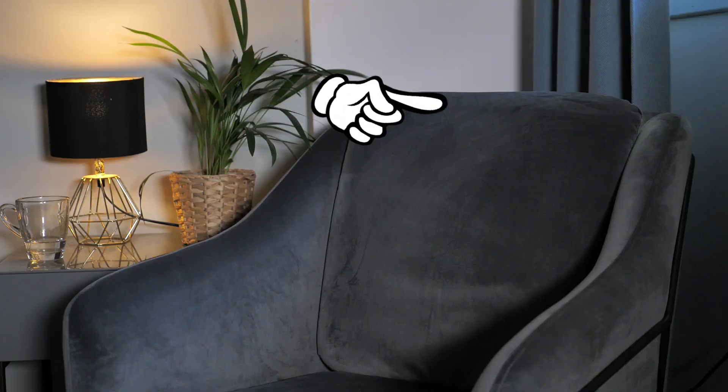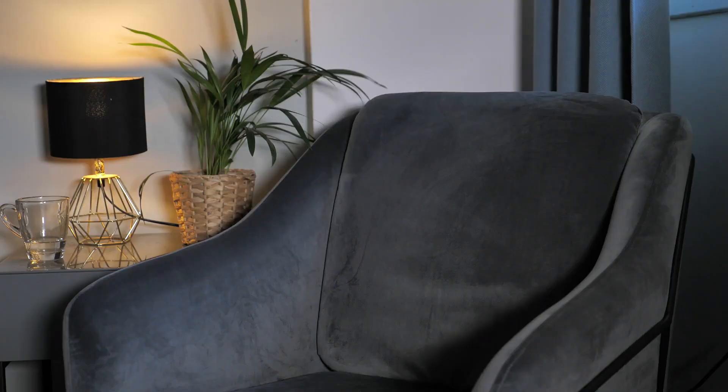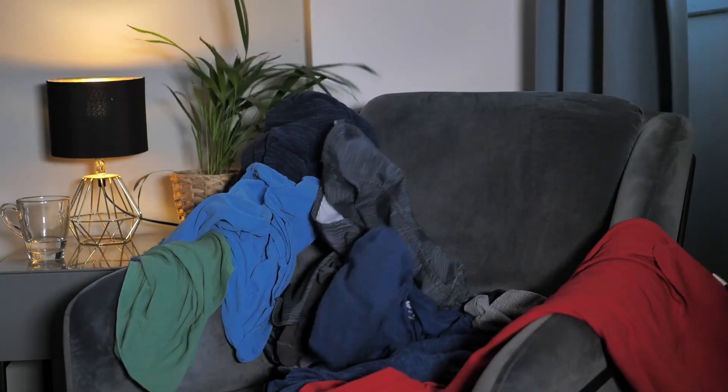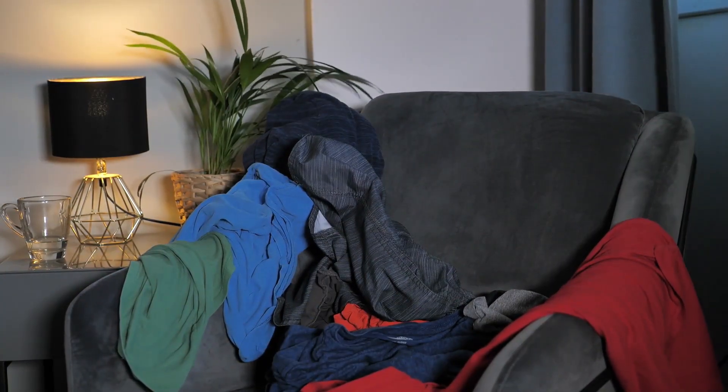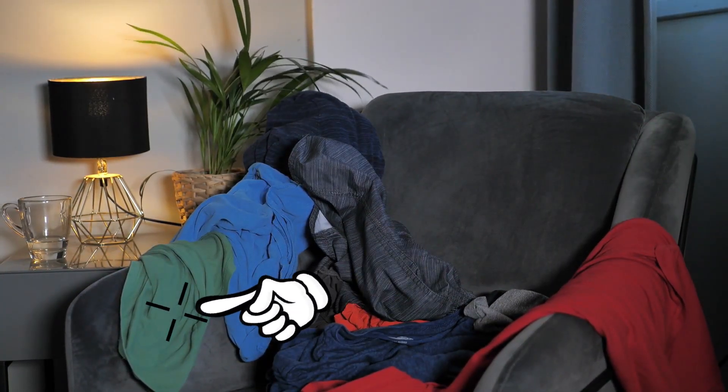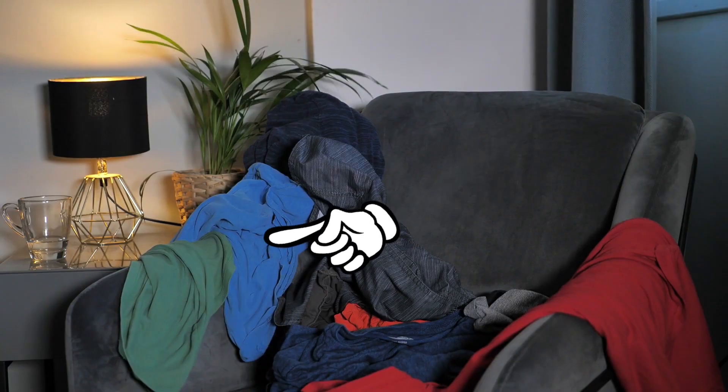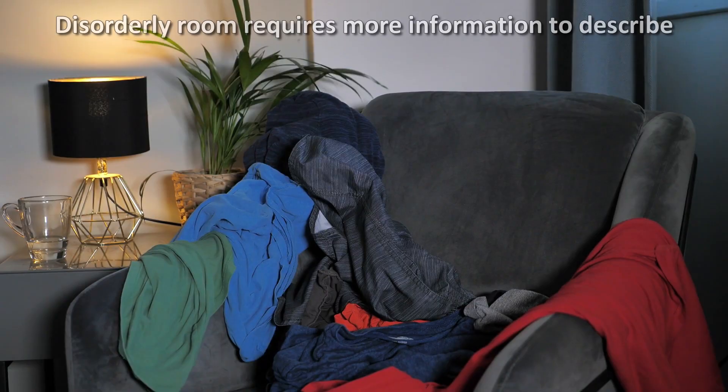Let's say we are looking at a neatly cleaned room. This requires relatively little information to describe. We have a chair here, a lamp there, a curtain behind the chair, etc. But now, if it's a messy room, then it will take more information to describe it. Like a green shirt draped in a complicated way over the arm, blue shirt resting over the arm of the chair and green shirt, etc. This disorder requires more information to describe.